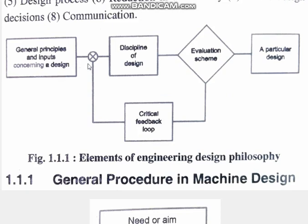In the block diagram format, the elements of engineering design philosophy are shown with general principles and inputs concerning a design, followed by the discipline of design, and then an evaluation scheme. Based on general principles, you design, choose material, size, and shape, assemble the components, and then evaluate the result. If there are any problems, you go back and correct them — testing repeatedly, rectifying problems — until all problems are resolved and your particular design is ready.